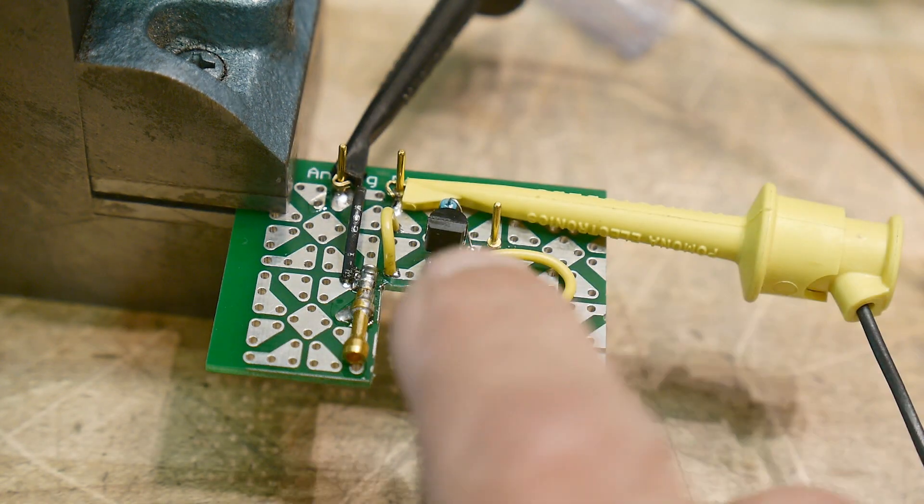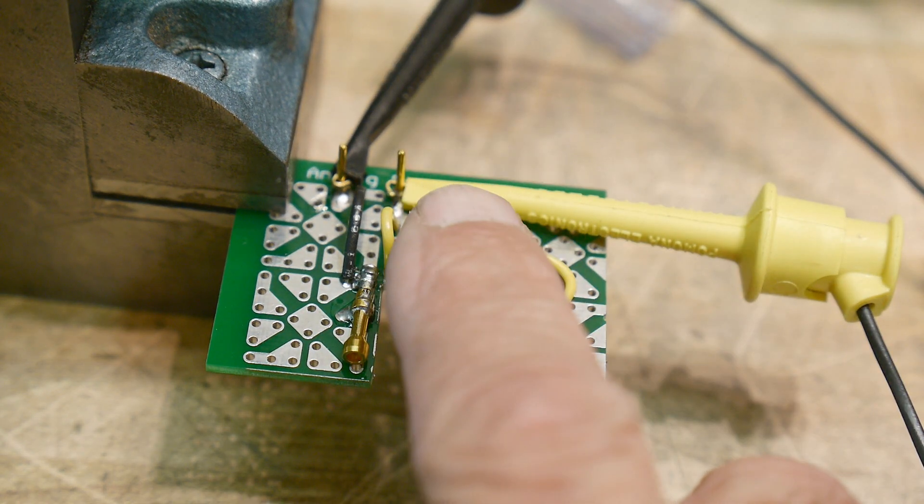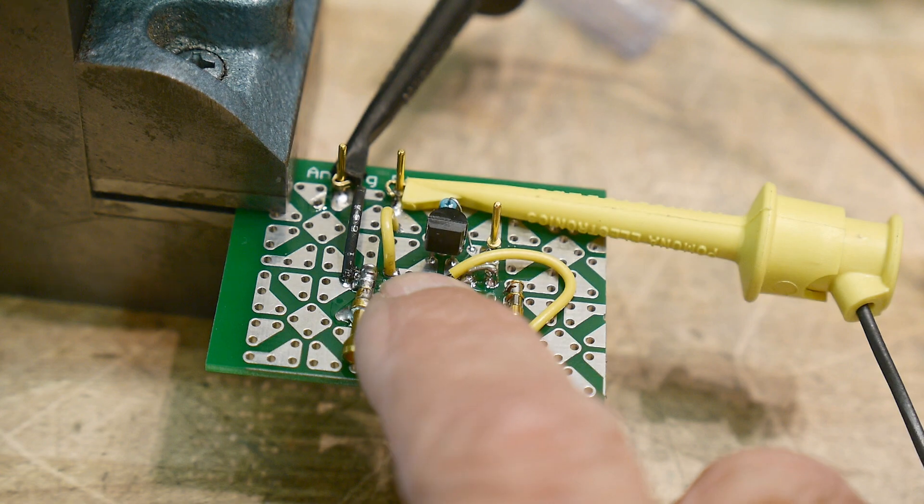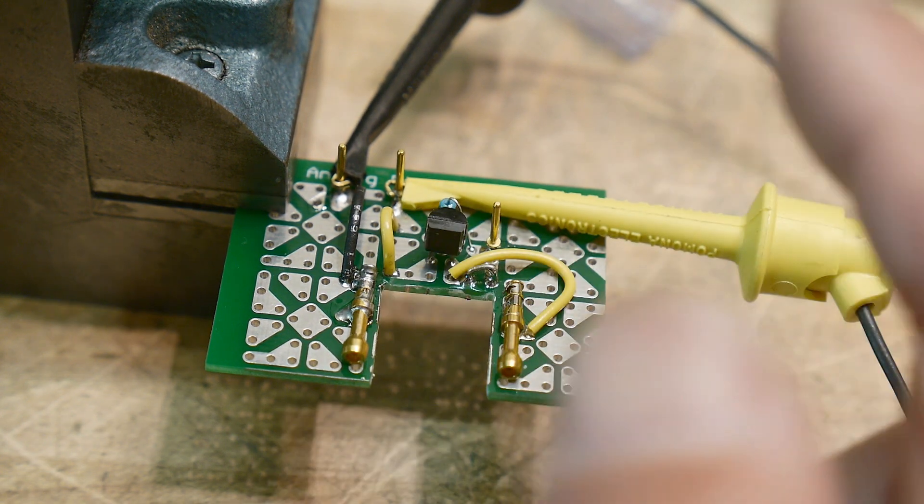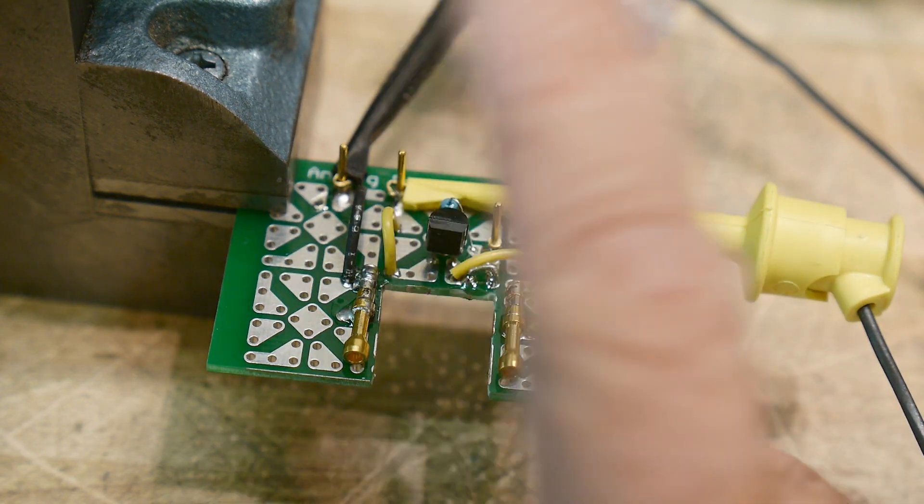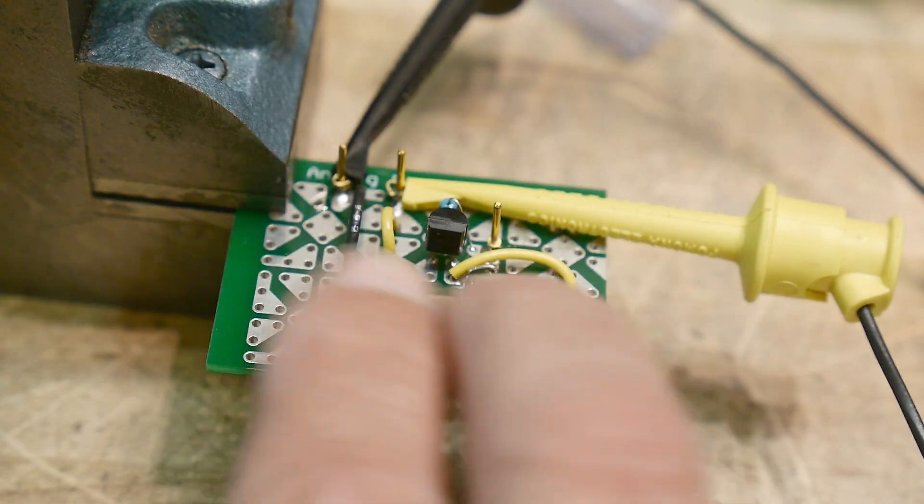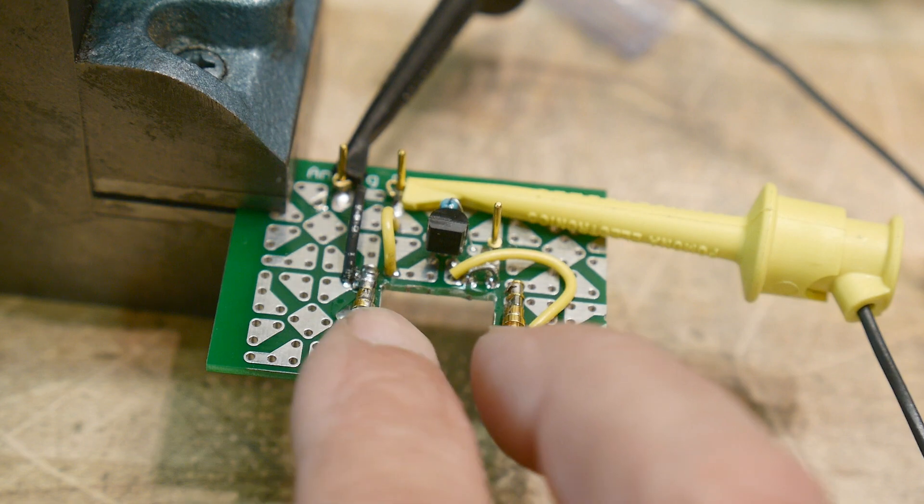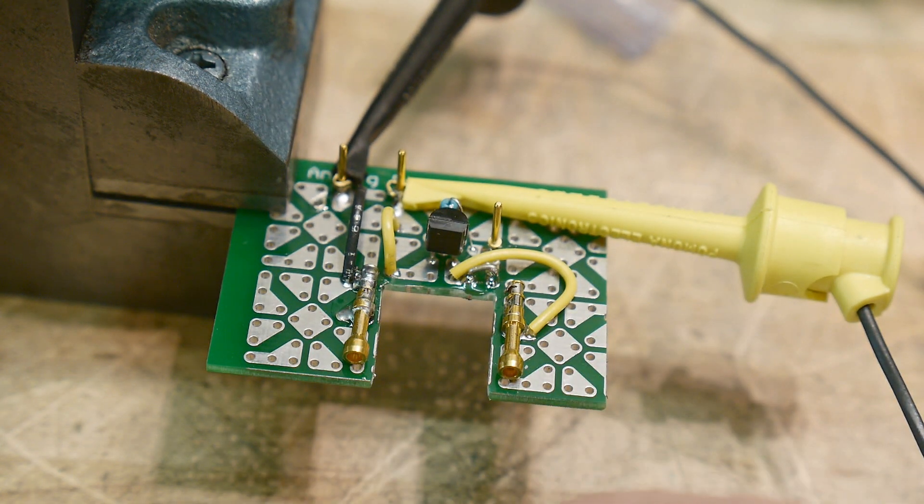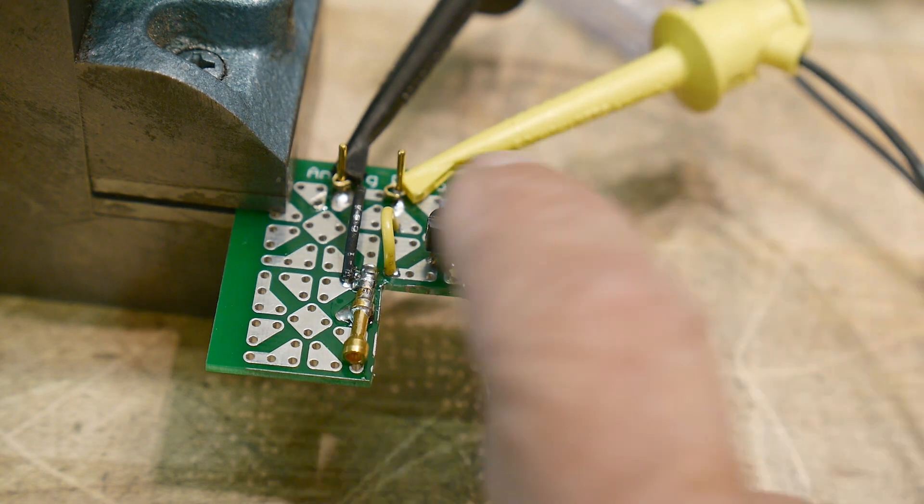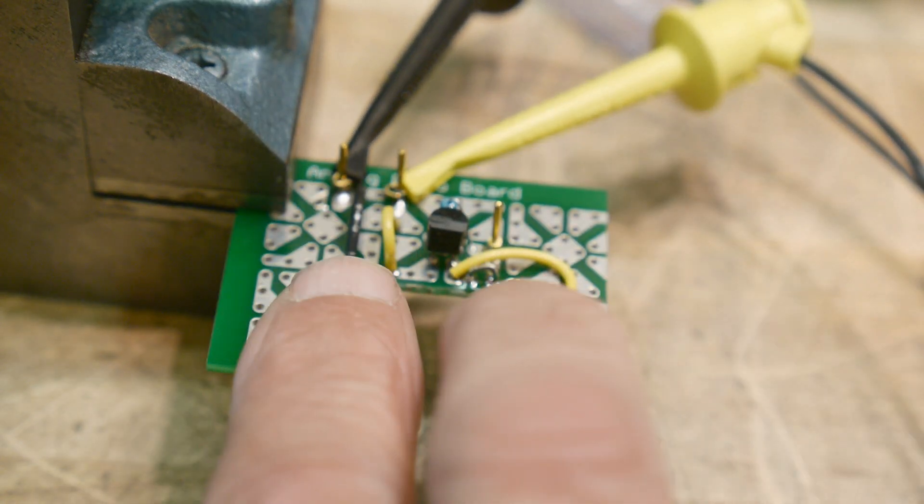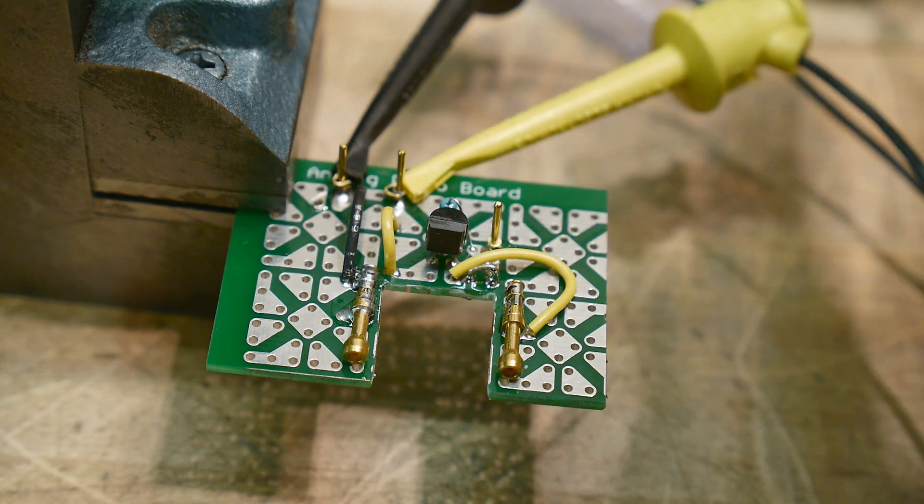So I have input here. I have 15 volts coming in and I'm using a current regulator. I showed these before. This is an LM334. Since I had some, I figured, well, go ahead and use it. And I just threw in a 10 ohm resistor. It ends up being about seven milliamps of current here, which I thought would be a reasonable number. So 15 volts coming in and then we'll measure the voltage across the diode.